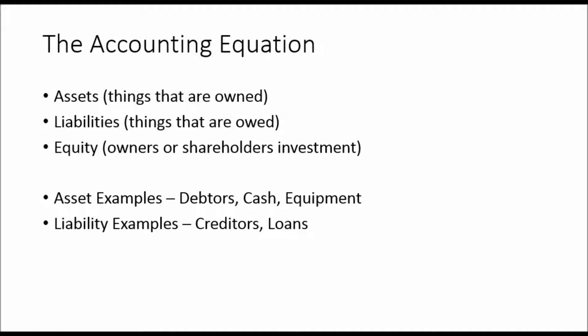Asset examples include things like debtors — that's cash that is owed to us by our customers. Cash, so bank accounts, savings accounts, the petty cash — these are things that we own. Equipment is also something that we own. So all of these are asset examples: things that we own.